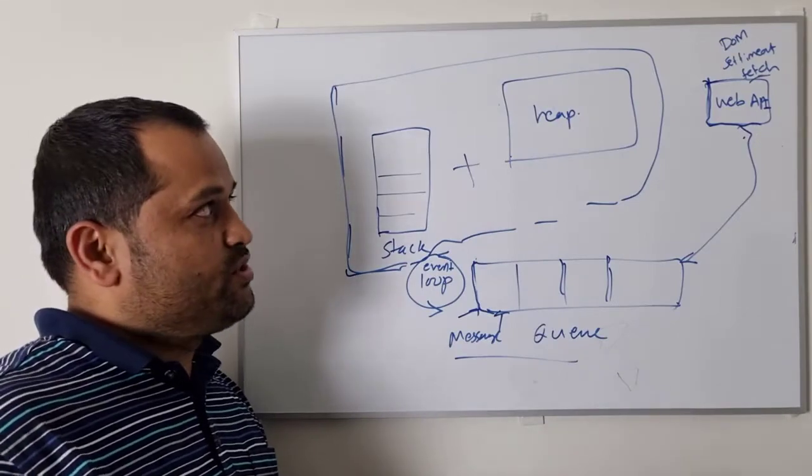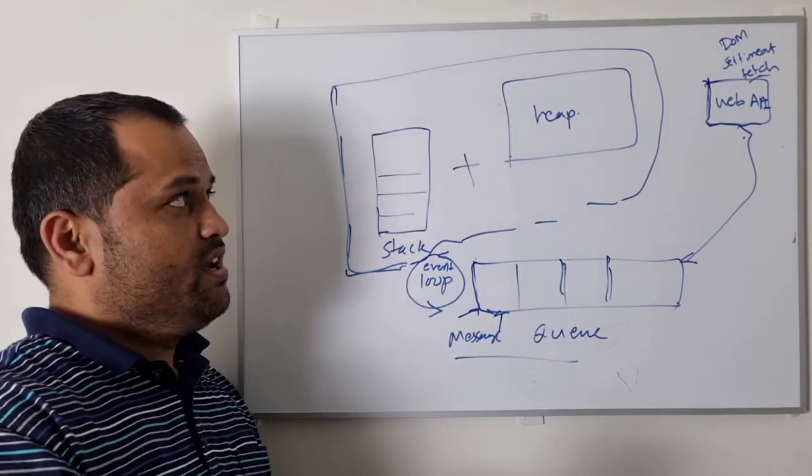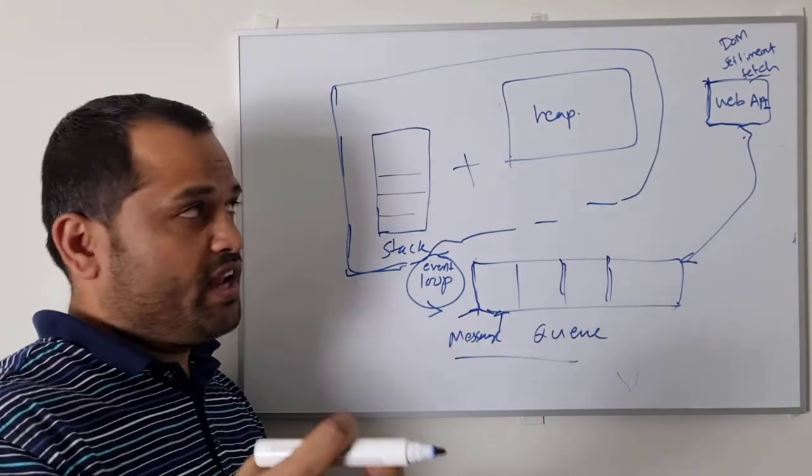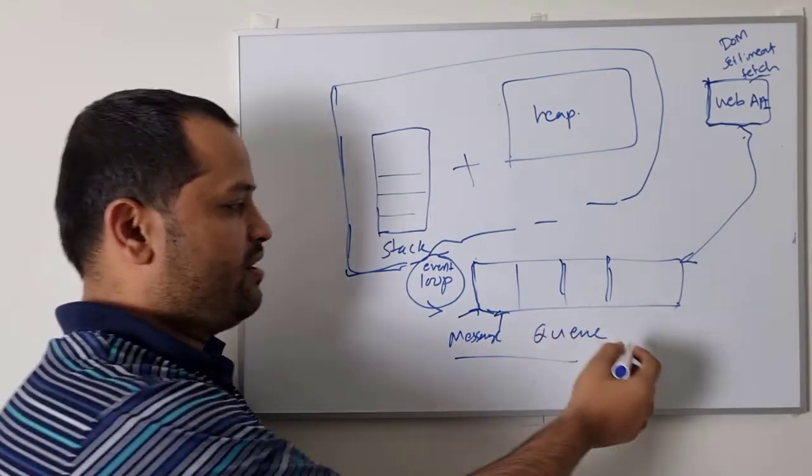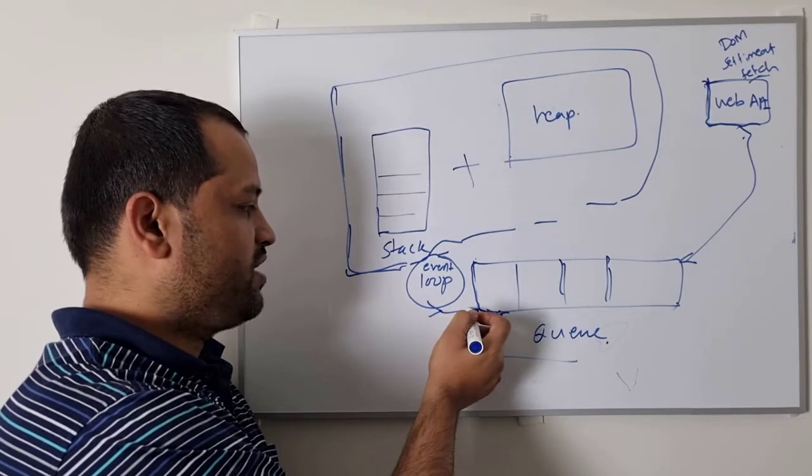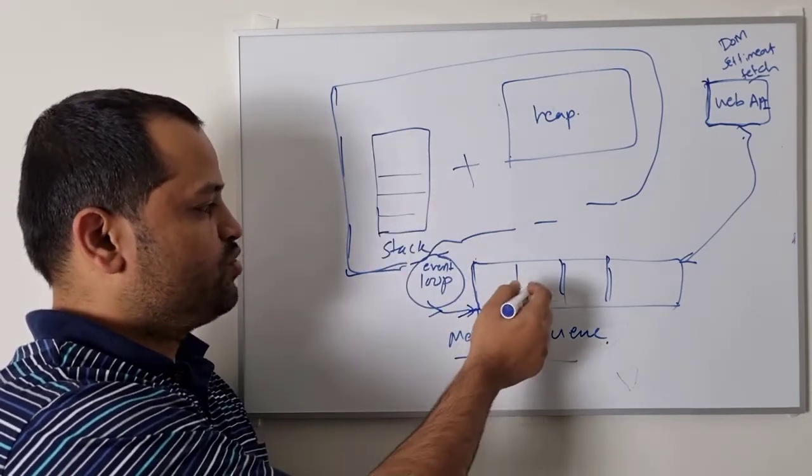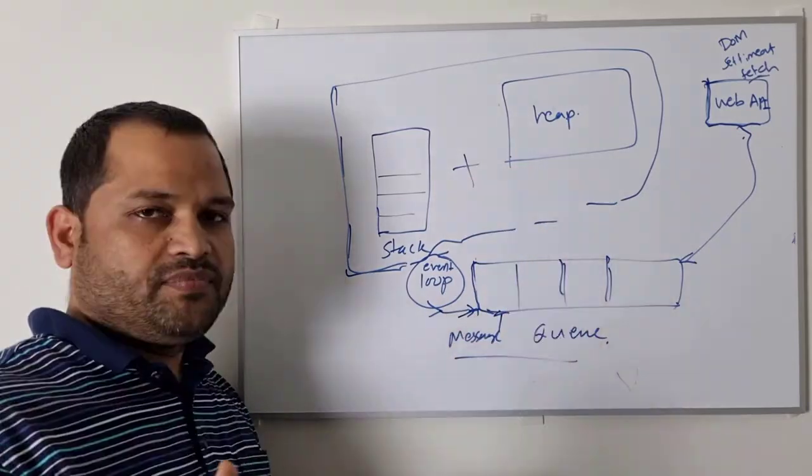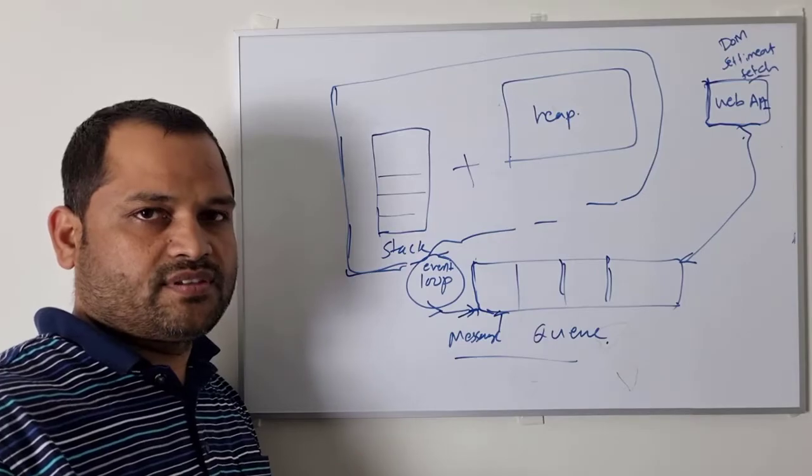So whenever JavaScript engine is looking at these instructions—fetch, setTimeout, DOM manipulation—all these instructions, Web API is taking over and then at the time when the events are getting triggered, it will put those messages into this message queue. Event loop is already constantly pulling this message queue. And then whenever the stack is empty, those messages will be processed one by one. Now there are two different types of message queues, which I will be covering in the next lesson. Peace.